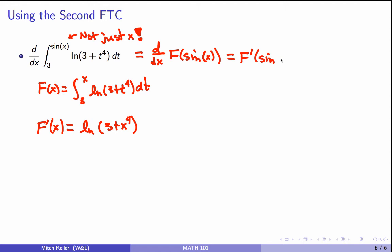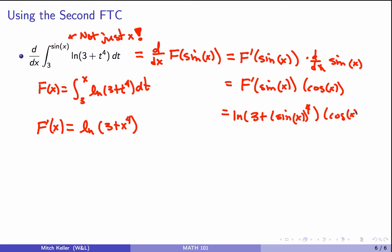So we know this times the derivative of the inside guy. The derivative of sine x is cosine x. F prime of sine of x—well we already figured out F prime, so now we just need to come in here and put in the sine of x part. And there we go.